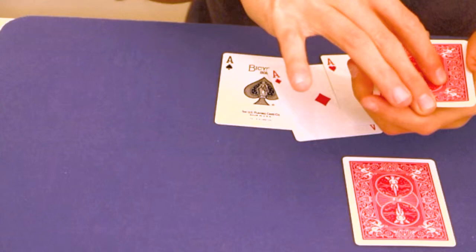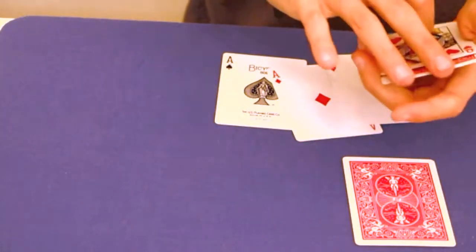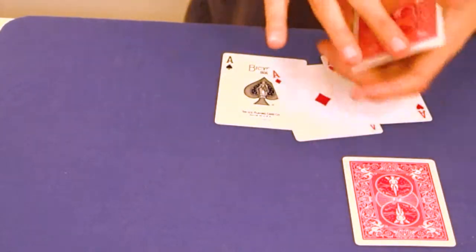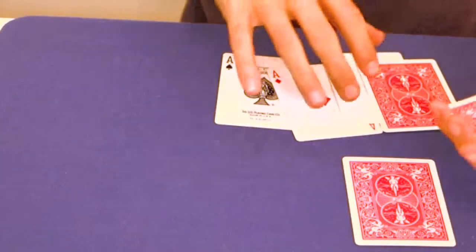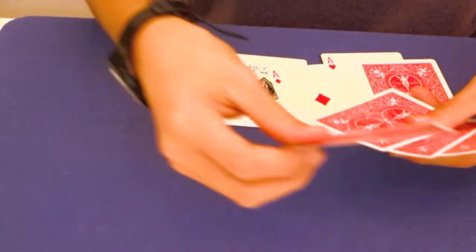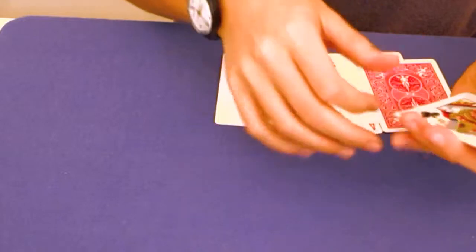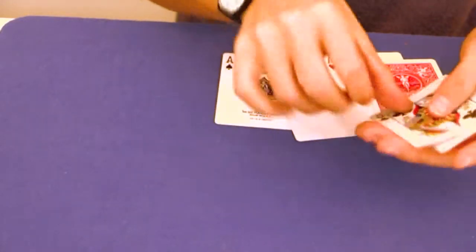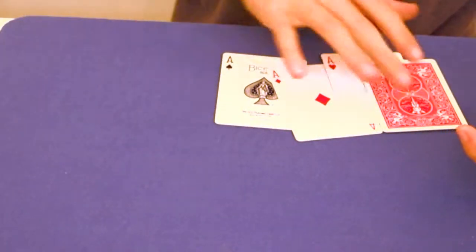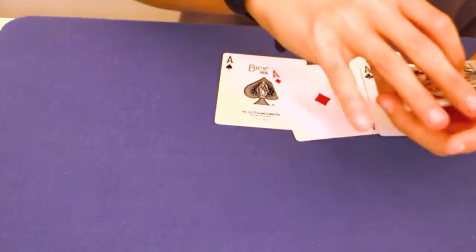I'm going to take the 3rd queen, queen of hearts, place it here. I'm going to place the ace. And look, 1, 2, 3, 4, no ace. Where is it? It's here.